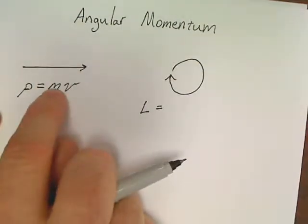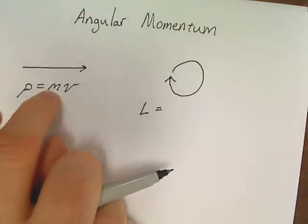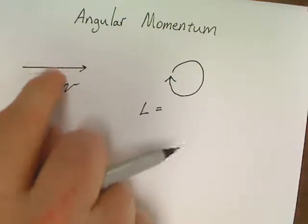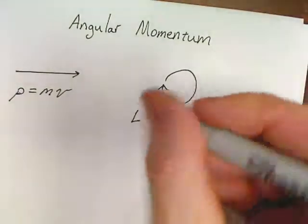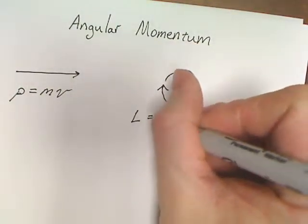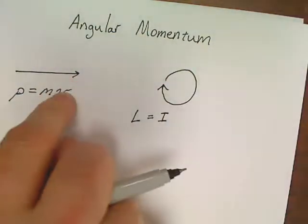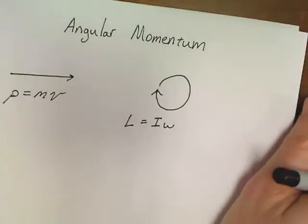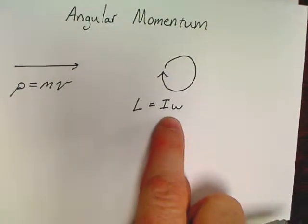If an object going in a straight line has a momentum given by ρ equals mv, you gotta think, something moving in a circle would also have a momentum. Because if there's a linear velocity, there's also an angular velocity. You should be able to figure out this equation already. The symbol for angular momentum is L. What would we use instead of m for circle world? Instead of m, we use the letter I because it takes into account how that mass is distributed. And in circle world, instead of using a v, we use a ω.